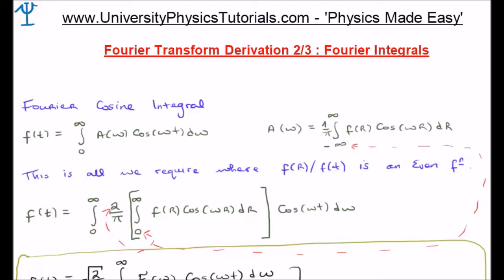So where our function f of t is even, the b of omega term, or the odd terms, are going to be 0, and we'll only be left with a of omega and f of t in terms of a of omega. We're left with the Fourier cosine integral.